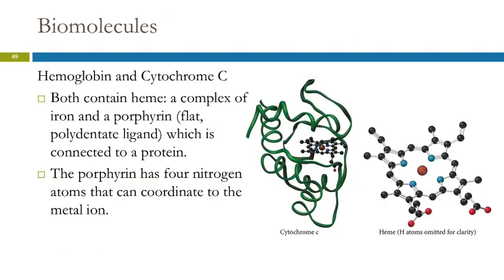So biomolecules, here's hemoglobin and cytochrome C. Both of these have heme, which is a complex of iron and a porphyrin. It's a flat polydentate ligand. And the heme is connected to the protein. So the porphyrin has four nitrogen atoms that can coordinate to a metal ion.